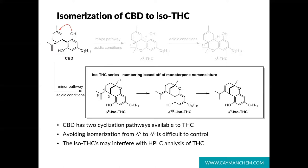Another pathway also exists where cyclization occurs to the cyclohexene ring structure to provide a new tetrahydrocannabinol structure, which is referred to as iso-THC. The iso-THC series was first described by Mechoulam's lab and uses the monoterpene nomenclature. The initially formed delta-8 iso-THC structure is very different from the delta-8 THC structure previously discussed. Additionally, the delta-8 iso-THC isomer that initially forms readily isomerizes under acidic conditions to provide two other iso-THC isomers: delta-4-8 iso-THC and delta-4 iso-THC. Very little is known about any biological activity of the iso-THC series, and they primarily present themselves as interferences in the HPLC baselines for THC isolates formed from this CBD cyclization.